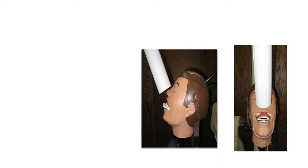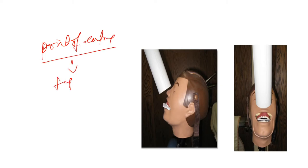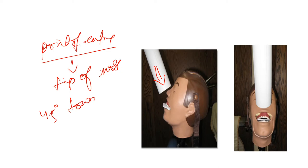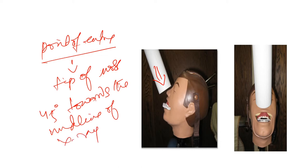For the maxillary anterior standard occlusal projection, the point of entry is from the tip of the nose, directed at 45 degrees towards the midline of the x-ray film. Remember: point of entry is the tip of the nose and angulation is 45 degrees towards the midline — this is an MCQ point.